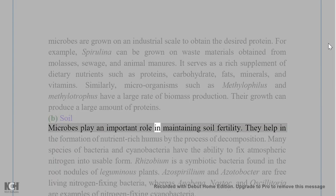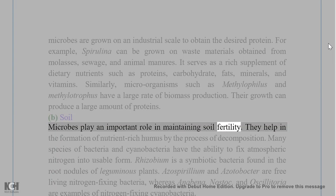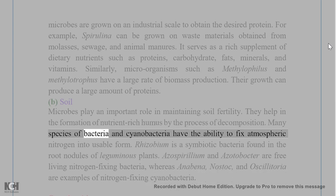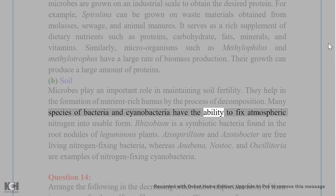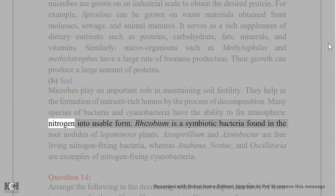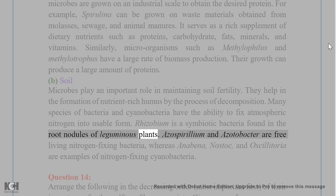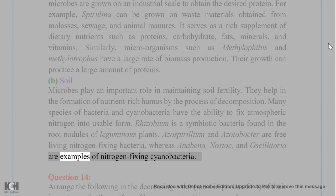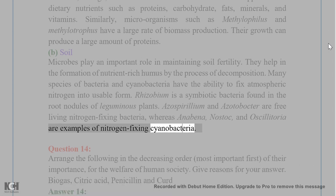Answer 13B — Soil. Microbes play an important role in maintaining soil fertility. They help in the formation of nutrient-rich humus by the process of decomposition. Many species of bacteria and cyanobacteria have the ability to fix atmospheric nitrogen into a usable form. Rhizobium is a symbiotic bacteria found in root nodules of leguminous plants. Azospirillum and Azotobacter are free-living nitrogen-fixing bacteria, whereas Anabaena, Nostoc, and Oscillatoria are nitrogen-fixing cyanobacteria.